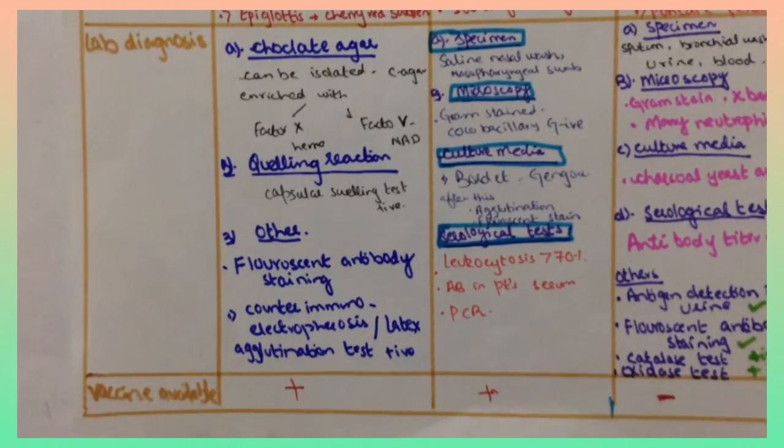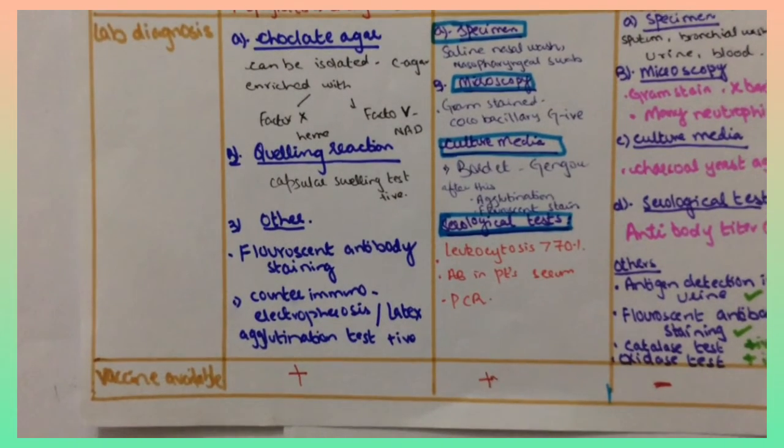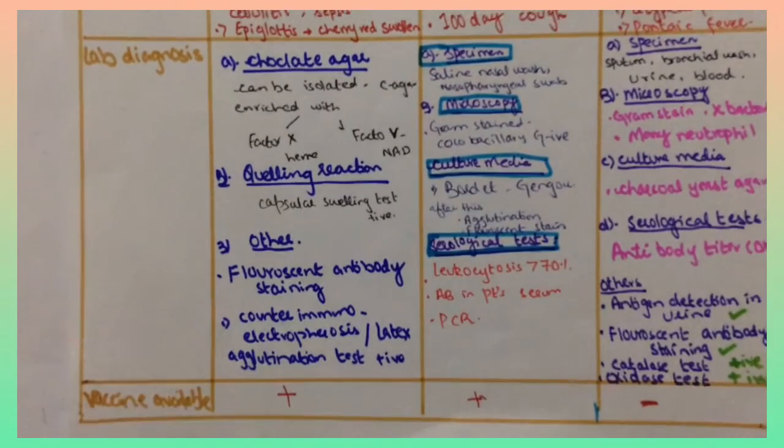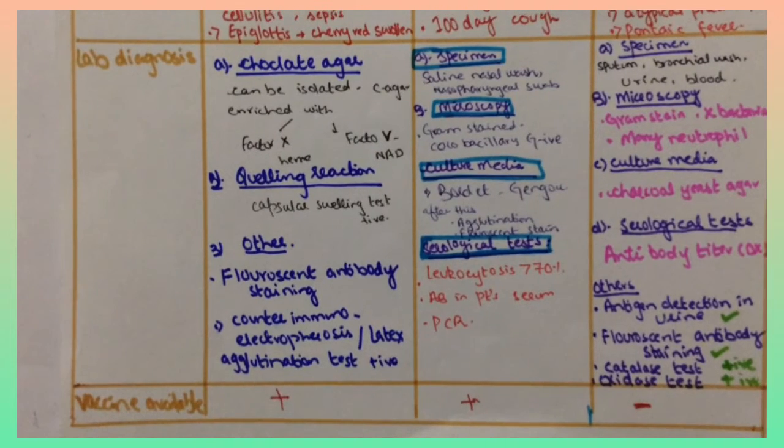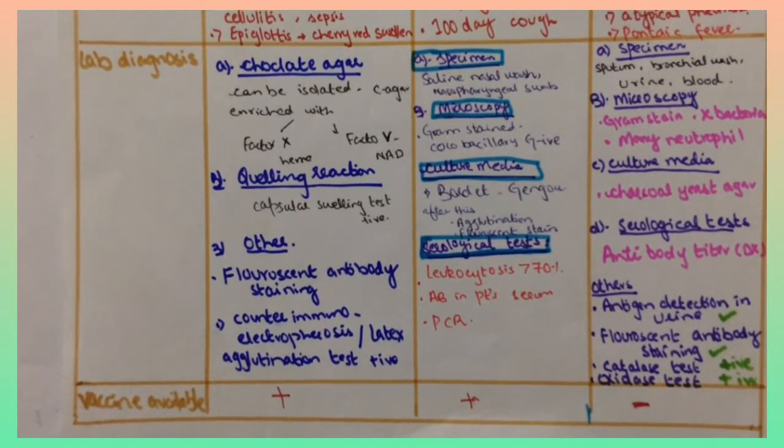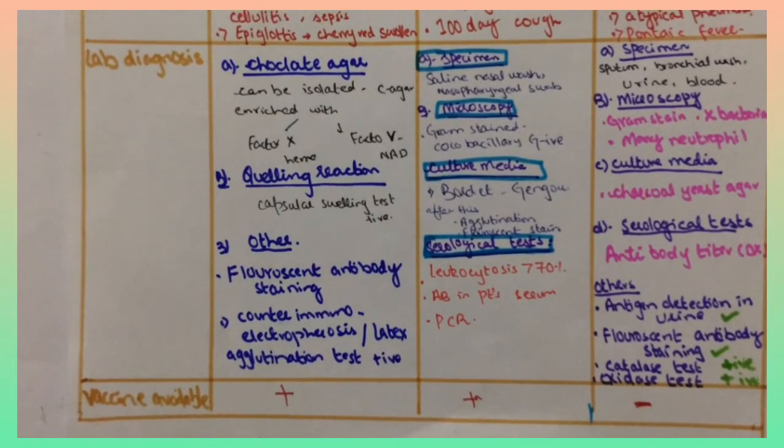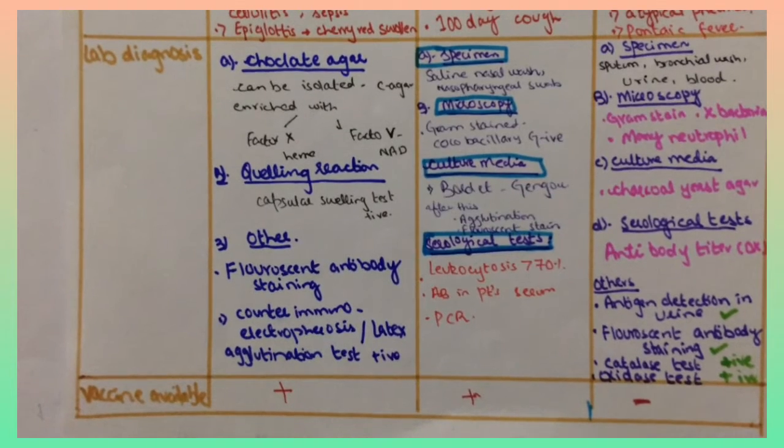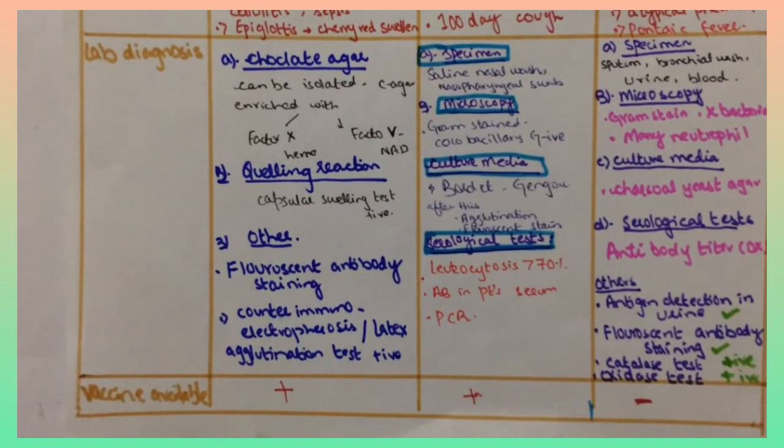Legionella culture media is charcoal yeast agar. Serological test is that antibody titer is used for diagnostic test and others include antigen detection in urine, fluorescent antibody staining and catalase test is positive, oxidase test is positive.